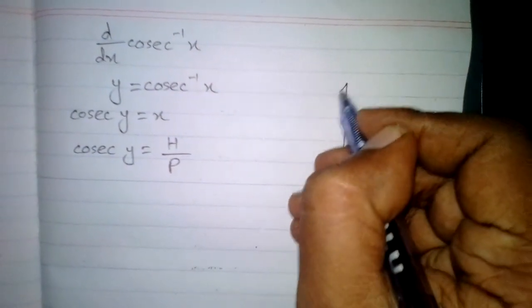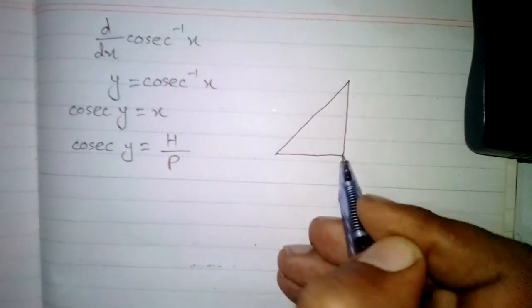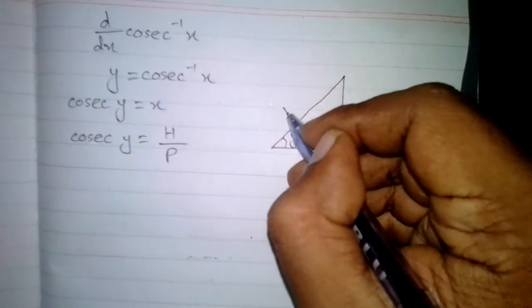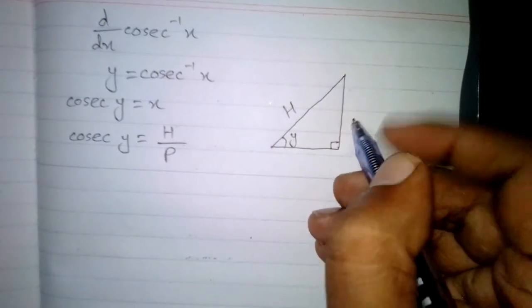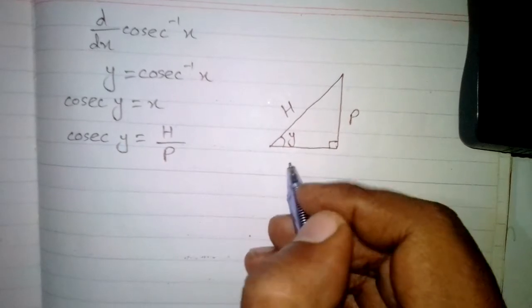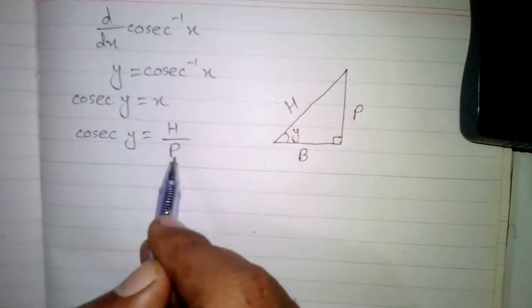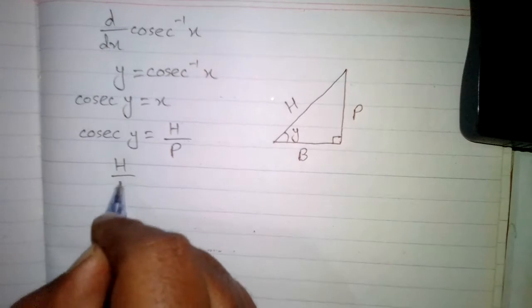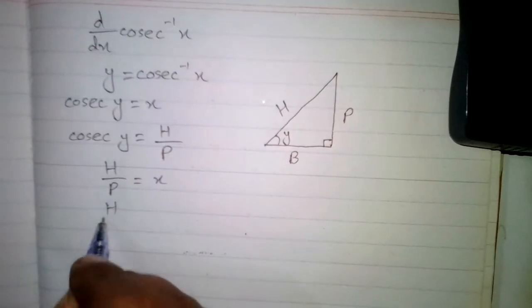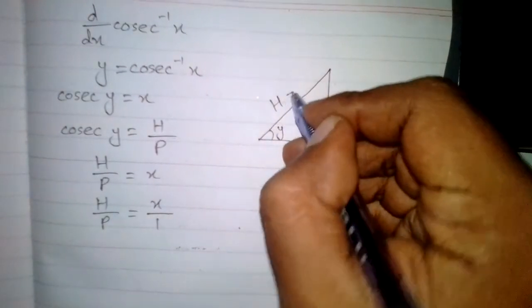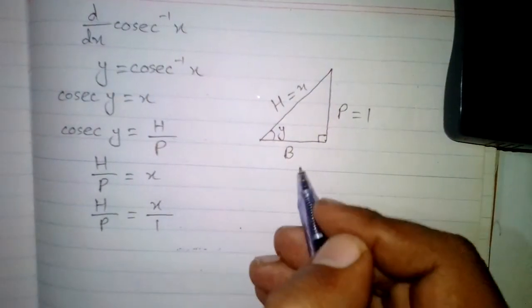We know that cosec y equals hypotenuse upon perpendicular in a right angle triangle. We draw a right angle triangle in which this angle is y and this is 90 degrees. The side opposite to 90 degrees is the hypotenuse, the side opposite to y is the perpendicular, and the side adjacent to y is the base. Since cosec y equals x and cosec y equals hypotenuse upon perpendicular, we can write hypotenuse upon perpendicular equals x upon 1, so hypotenuse is x and perpendicular is 1.